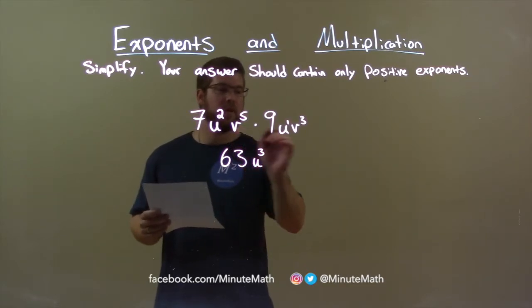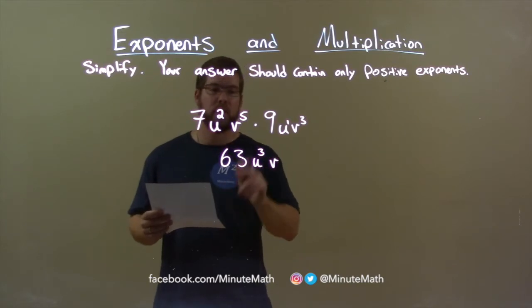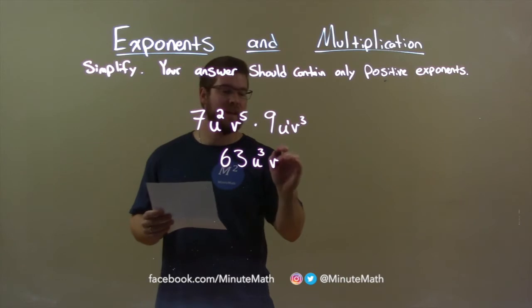Now, the v's. v to the 5th and v to the 3rd power. Same principle applies. And when you multiply them, v to the 5th times v to the 3rd, 5 plus 3 is 8.